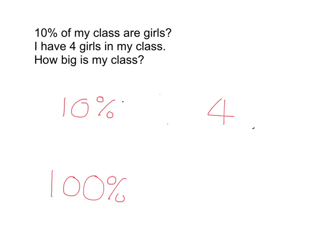To get from 10% to 100%, what do I have to do? I've got to multiply by 10. And if I know that 10% was just four kids, to get to 100% I have to multiply by 10 as well, so my 100% — my whole class — is 40 kids.